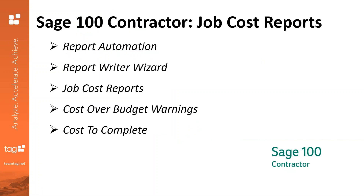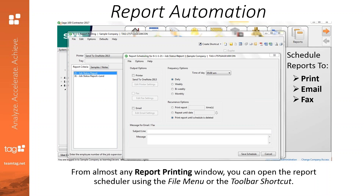Today's topic is job cost reporting in SAGE 100 Contractor. We'll highlight and discuss a few tools that have offered our clients a ton of benefit. We'll talk about automating reports, the report writer wizard which comes standard for all users, the most commonly used job cost reports, the cost over budget warning, and the cost to complete tool. Report automation is a perfect way to communicate with your team — management, project managers out on the job site, or even for yourself. This tool takes the work of running reports and automatically runs them on a saved schedule — daily, weekly, bi-weekly, or monthly at any time of day you choose. There's no limit on how many reports you schedule.